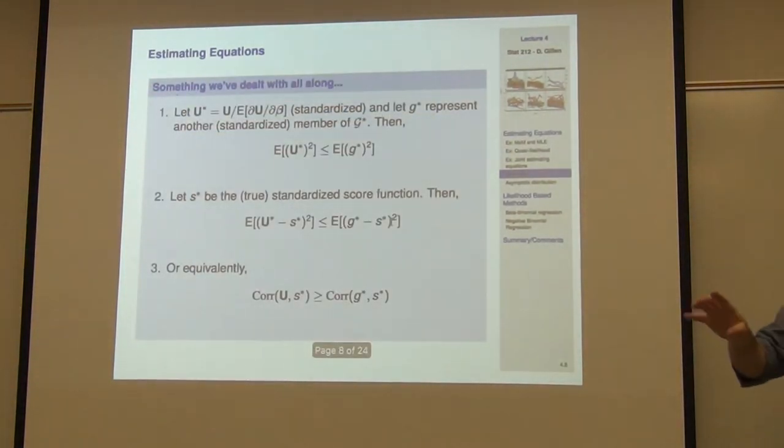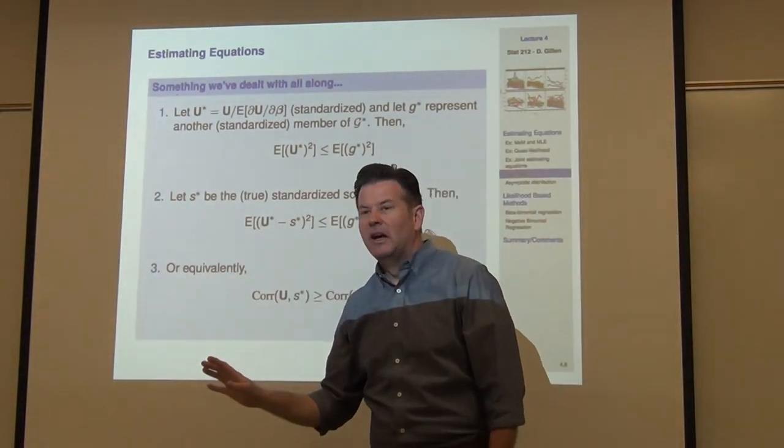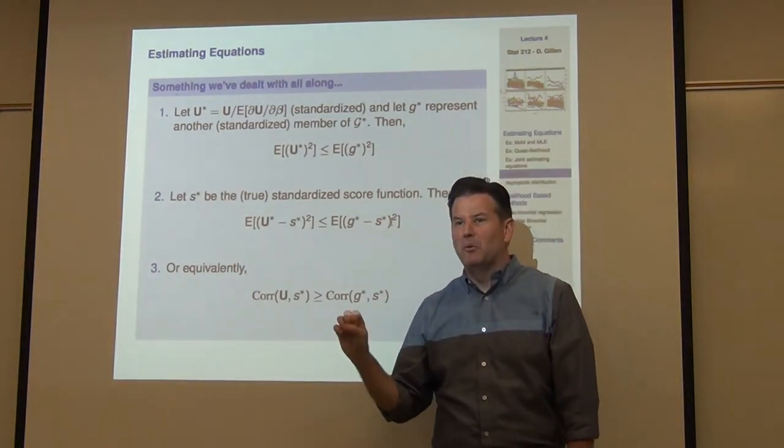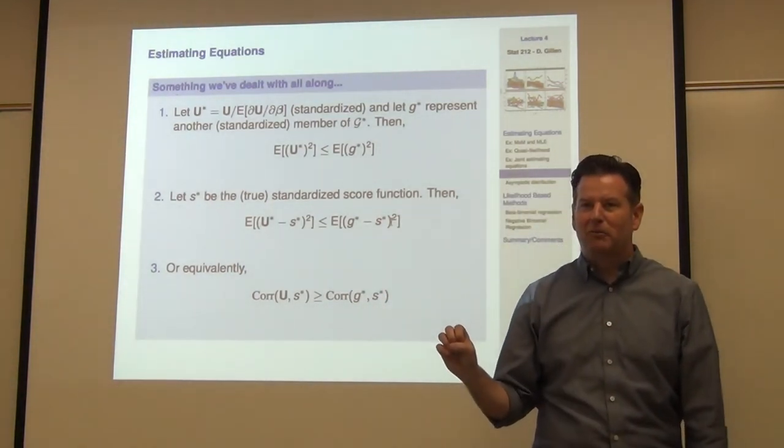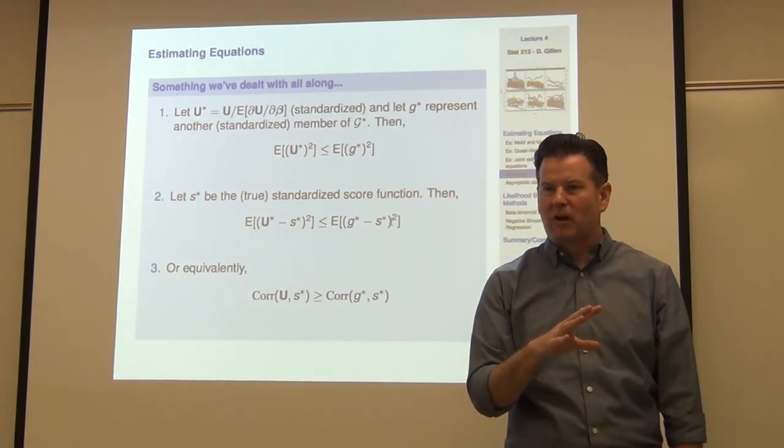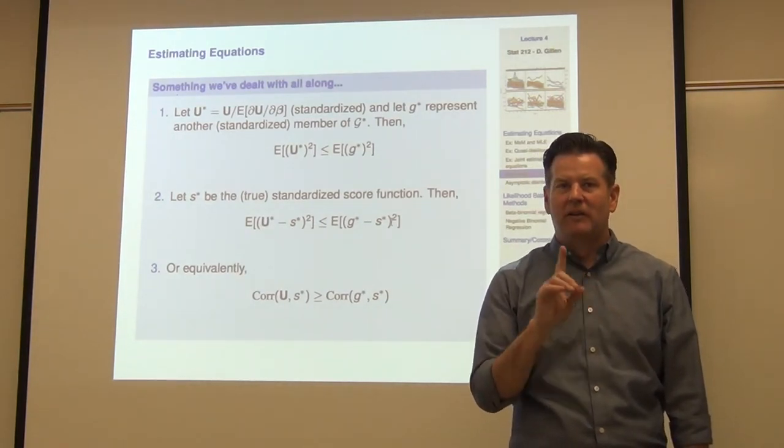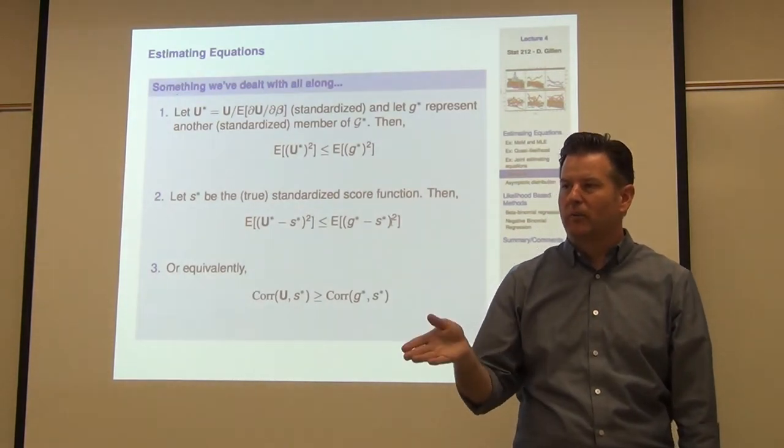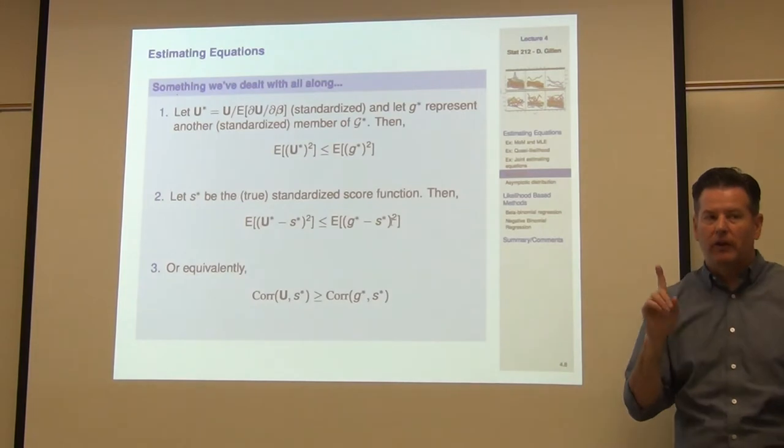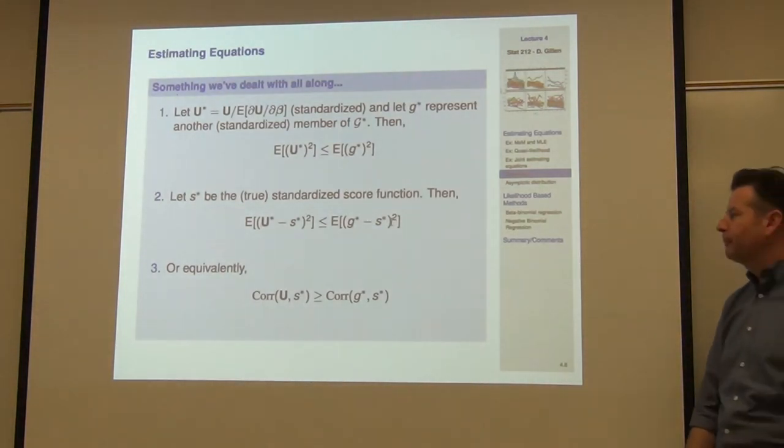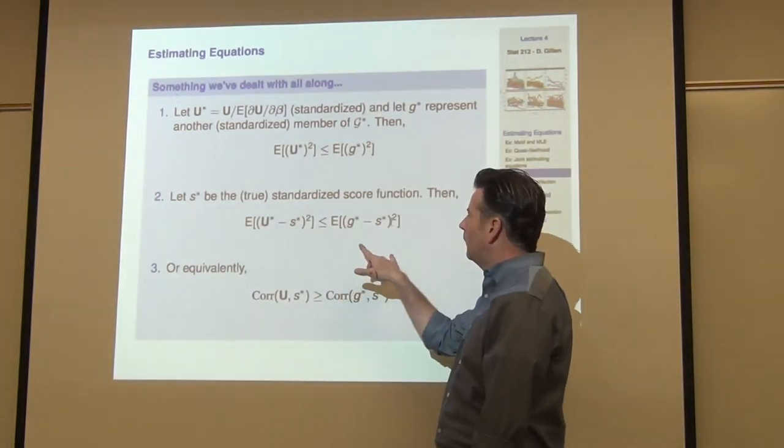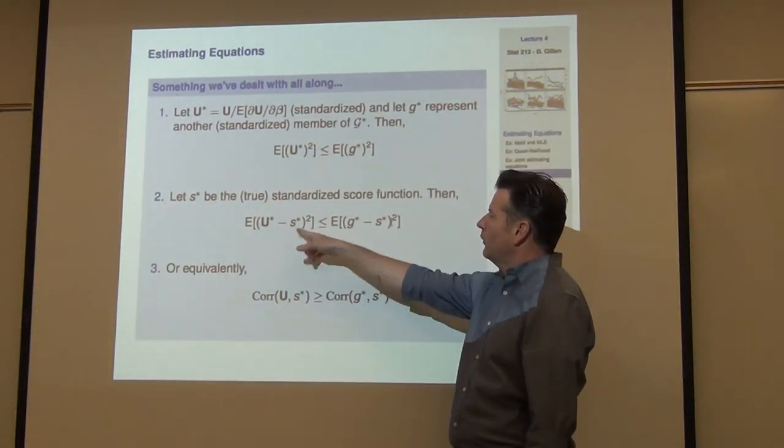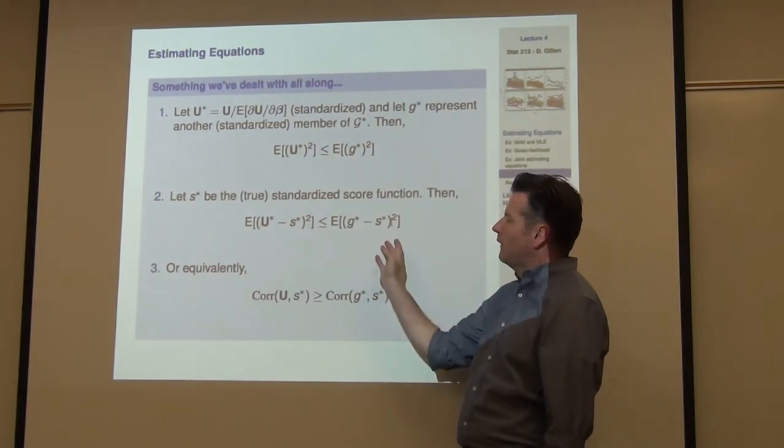And this should actually sound familiar to you guys. We proved optimality within a class of linear estimators before. 2.11. Gauss-Markov. When we did Gauss-Markov, that's what we did. We said, let's focus on the class of linear estimators and walk through it. And we showed that OLS under homoscedasticity was optimal. So that's kind of a nice property there. It says that basically, you can think about this as getting closer. If you expand this guy out, run the expectation through, you'll see that this is actually an equivalent statement to saying that the correlation between U star and S star is greater than or equal to the correlation between G star and S star.